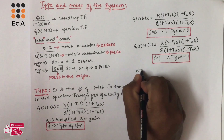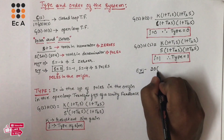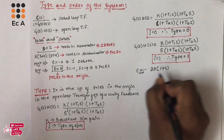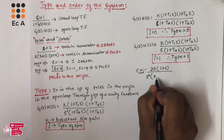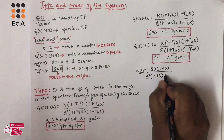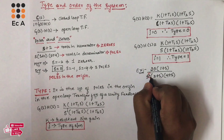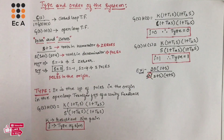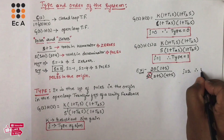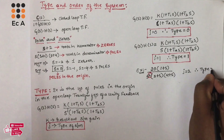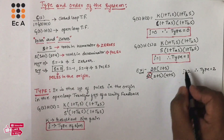Let us take an example to understand this. Consider the expression 20 into (1 plus s) divided by s squared into (2 plus s) into (4 plus s). In this expression, j is equal to 2, therefore the type of the system is also equal to 2. So this is an example of a type 2 system.